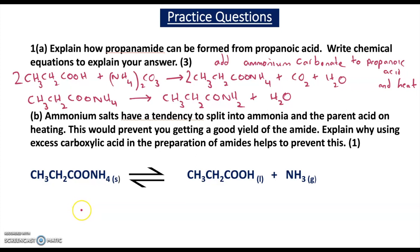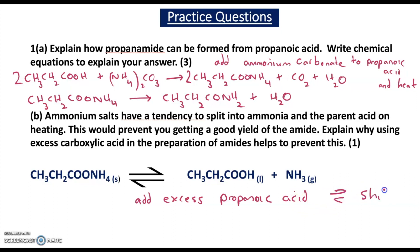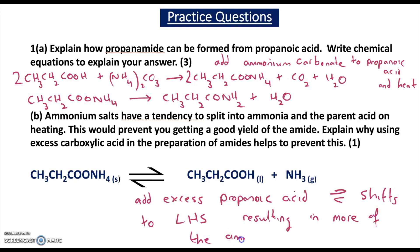For question B: ammonium salts can split into ammonia and the parent acid on heating, reducing the yield of amide. If you add excess carboxylic acid — in this case excess propanoic acid — the equilibrium shifts to the left by Le Chatelier's principle, producing more ammonium salt, and therefore a higher yield of amide, since ammonium propanoate dehydrates to form propanamide. Explaining the equilibrium shift and the resulting higher amide yield earns one mark.